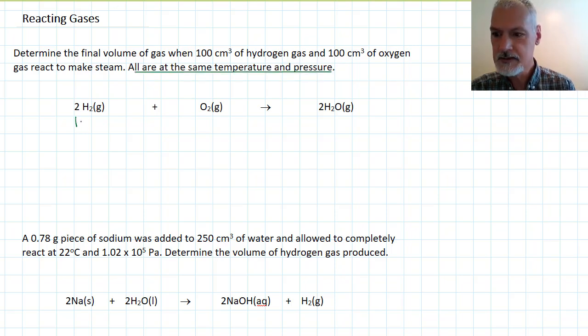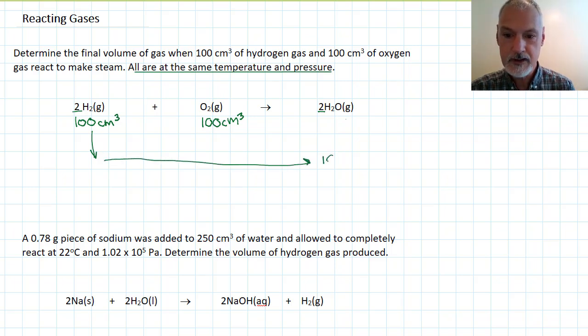We start off with 100 cubic centimeters of this gas and 100 cubic centimeters of this gas. Now, usually we take this information and convert it into moles and then apply the equation, but there's a shortcut I can use here. Because these are all at the same temperature and pressure, I can employ Avogadro's idea that equal volumes contain equal numbers of particles. So if I have 100 cubic centimeters of hydrogen and I produce water, I'm going to produce exactly the same amount of water, or steam in this case, because two produces two. There's the same number of particles in both of these containers. So if I have 100 cubic centimeters of hydrogen, perhaps I could produce 100 cubic centimeters of water vapor.